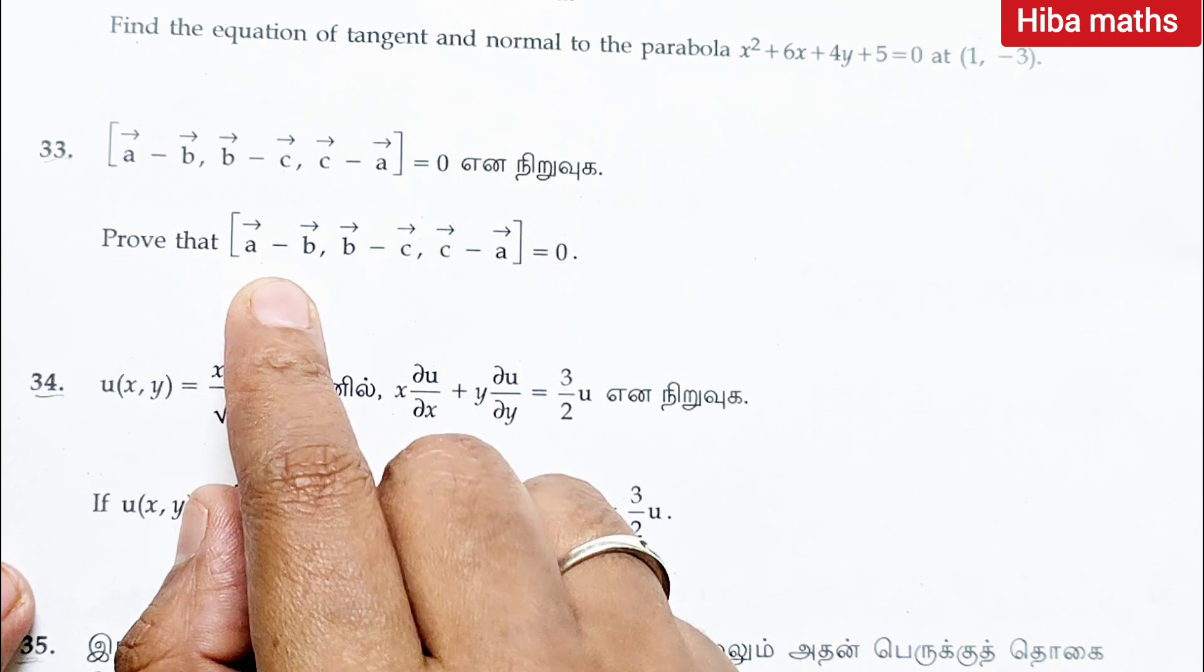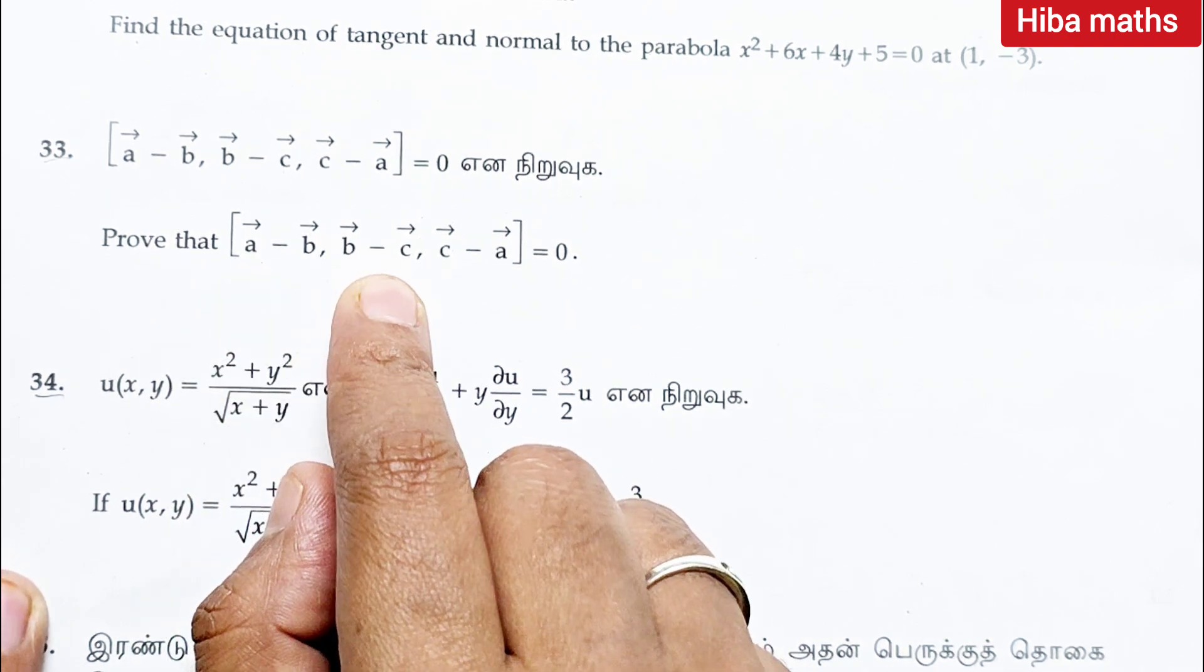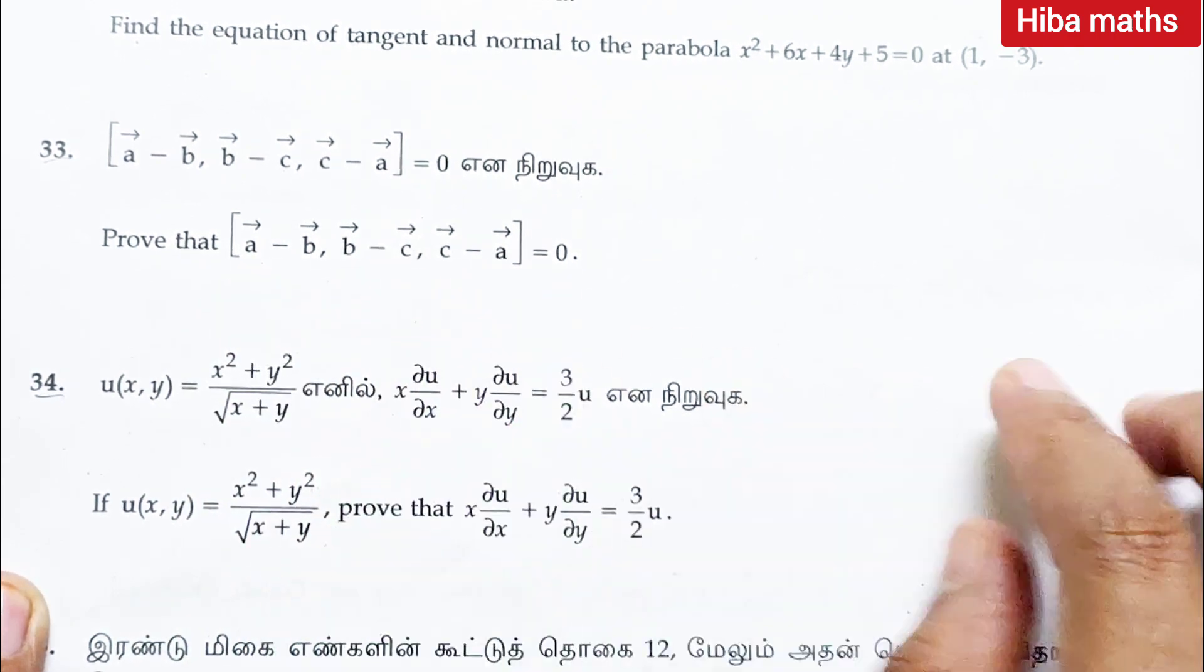Question 33: prove that a vector minus b vector, b vector minus c vector, c vector minus a vector is equal to 0.